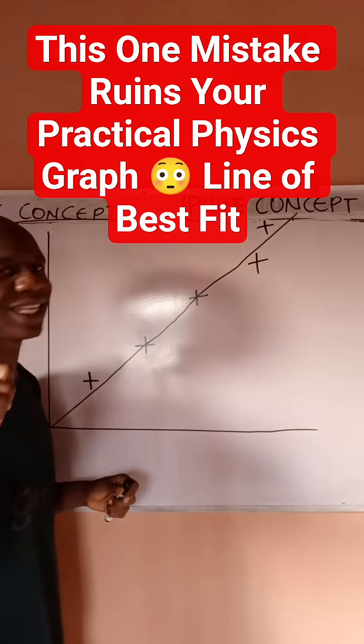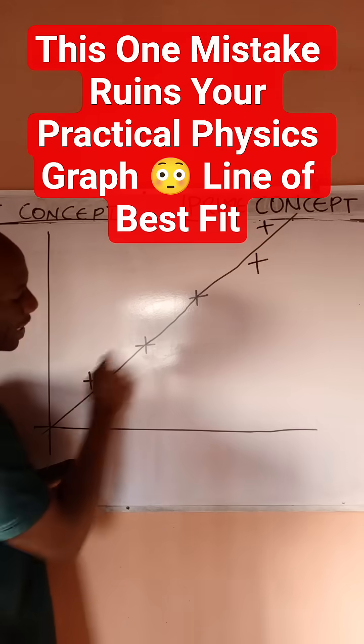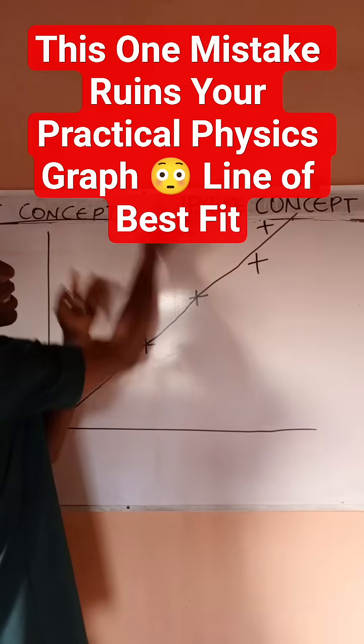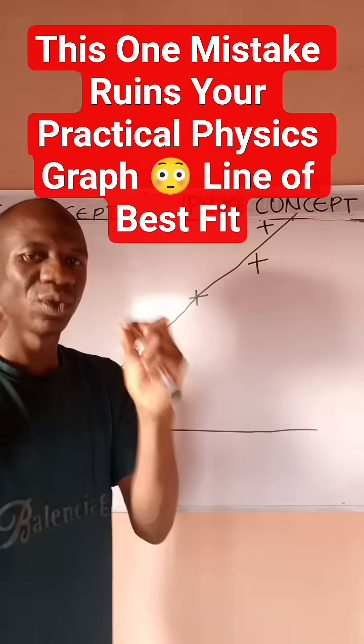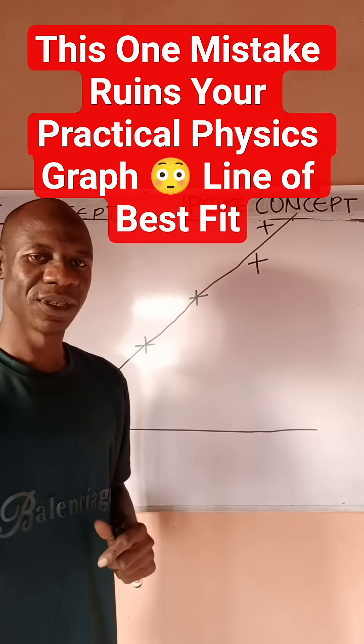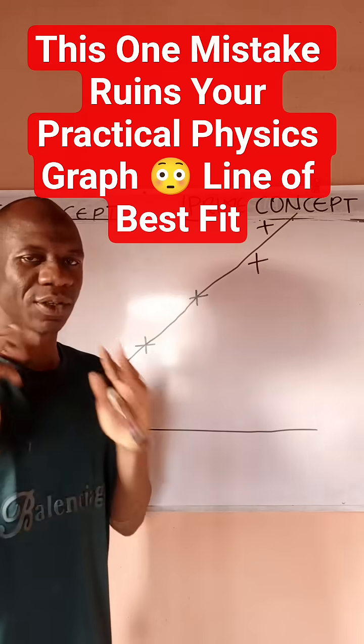you have drawn this line of best fit in a way that these three unaccommodated points are located above your graph, then it would no longer be qualified to be called line of best fit. So it means